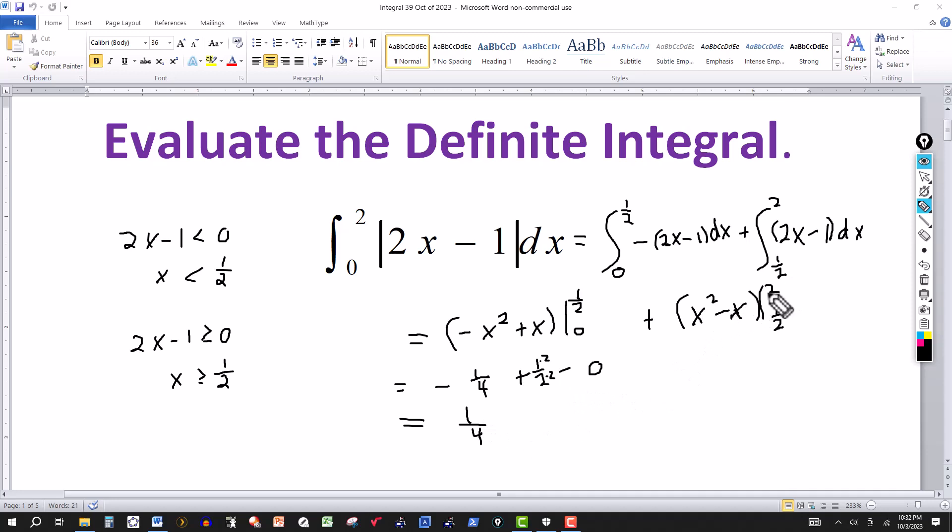And then for this one, put in 2, so this would be 4, 2 squared, minus 2. Then subtract the value at the lower limit, put 1 half there, that'll be 1 fourth minus 1 half. So 4 minus 2 is 2. Common denominator, so minus 2 over 4, and minus 1 fourth is a plus 1 fourth because of this minus in front.